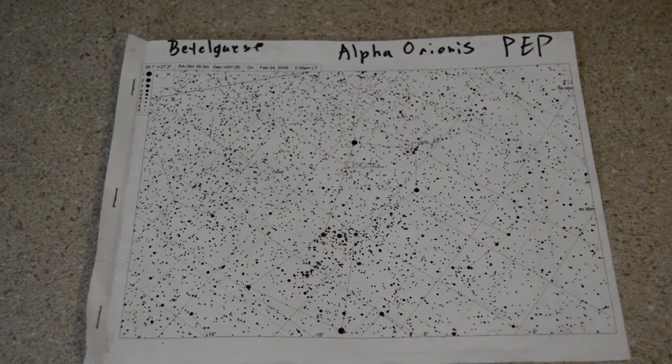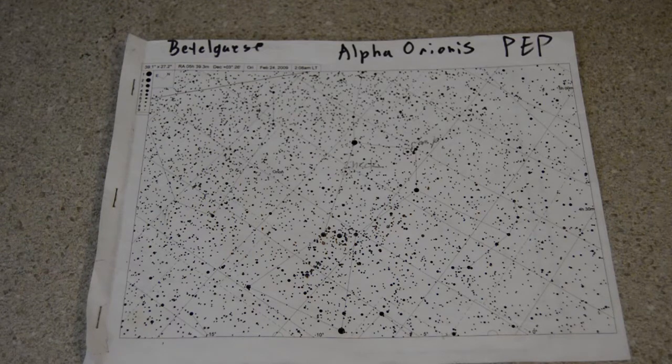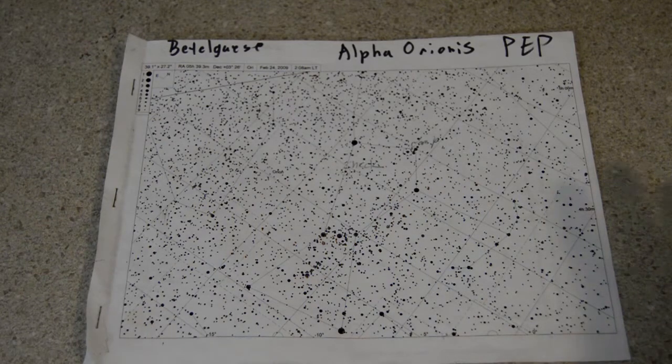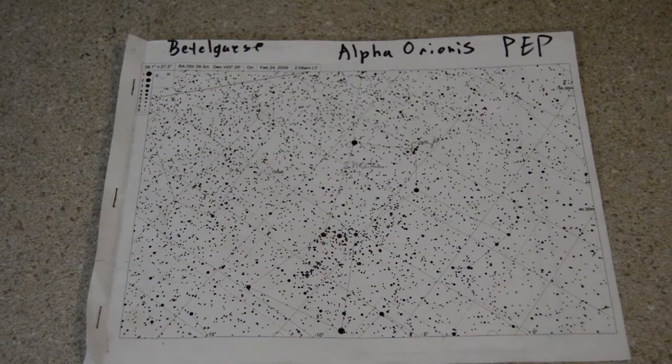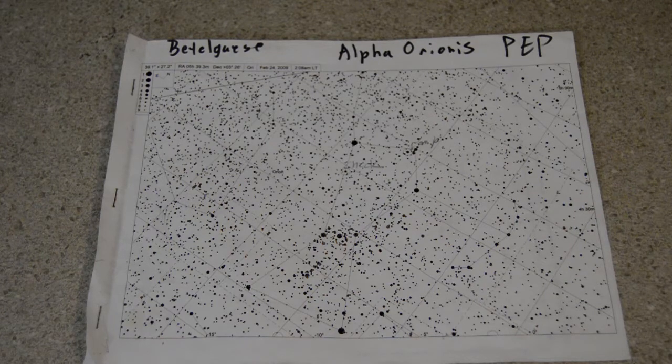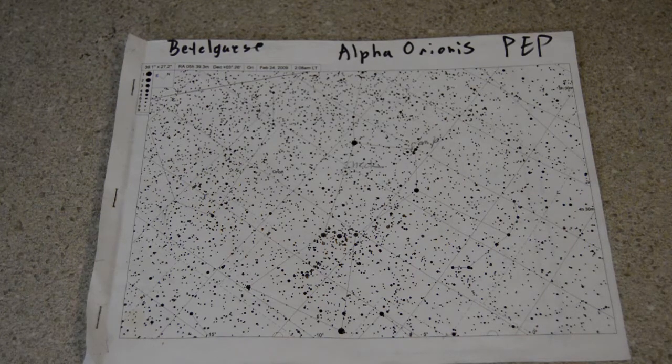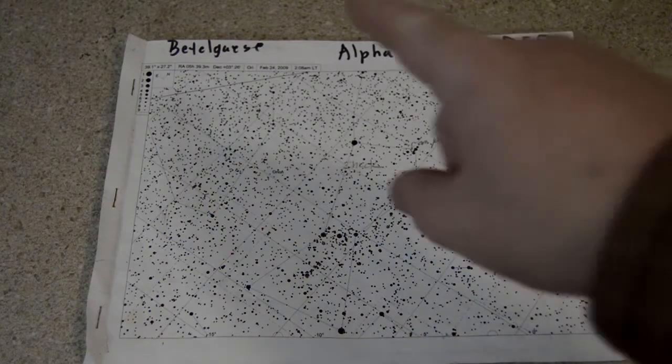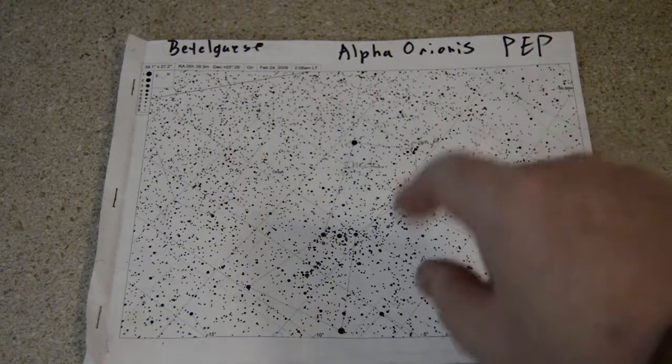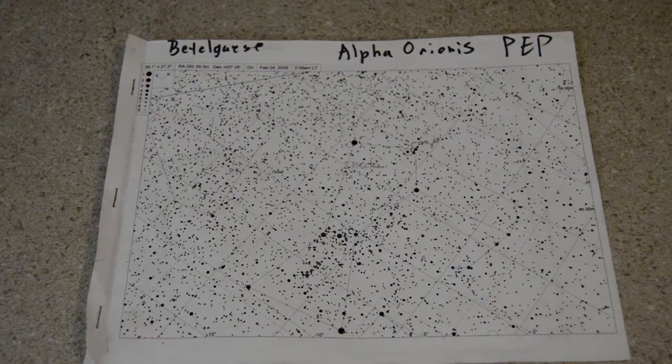So the way I handled the charts was that I first print out a rather wide chart using Megastar, which is a wonderful, although now very dated, program. This is my chart set for Betelgeuse off of Orionis. One of my favorite stars to do.